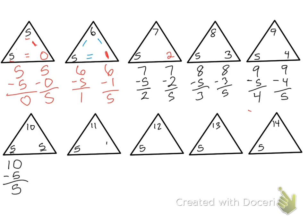5 plus 6 equals 11, so 11 minus 5 equals 6, and 11 minus 6 equals 5. 5 plus 7 is 12, so 12 minus 5 is 7, and 12 minus 7 is 5.